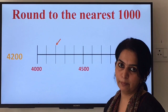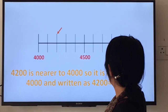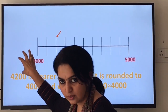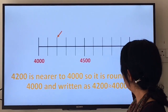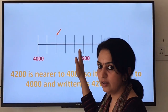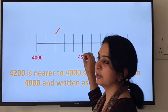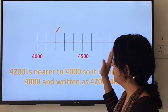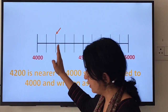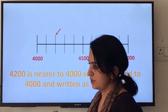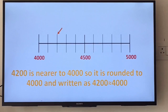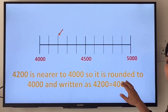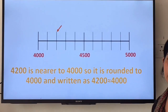Let us see this with the help of a number line. 4200 is between which two thousands? It is between the lower benchmark 4000 and the higher benchmark 5000, and 4500 is the midpoint. Each line indicates 100. 4200 is closer to 4000, so 4200 is rounded down to 4000 — written as 4200 ≈ 4000.